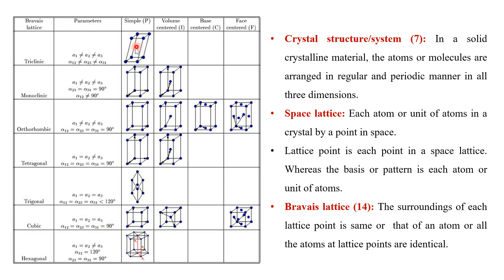Tetragonal has a = b ≠ c with all angles equal to 90°. Orthorhombic has a ≠ b ≠ c with all angles equal to 90°. A useful mnemonic is CTO-RHMP for the order of the crystal systems. Rhombohedral (also known as trigonal) has a₁ = a₂ = a₃ with angles not equal to 90° and greater than 120°. Using this table you can identify all seven crystal systems and their corresponding Bravais lattices.